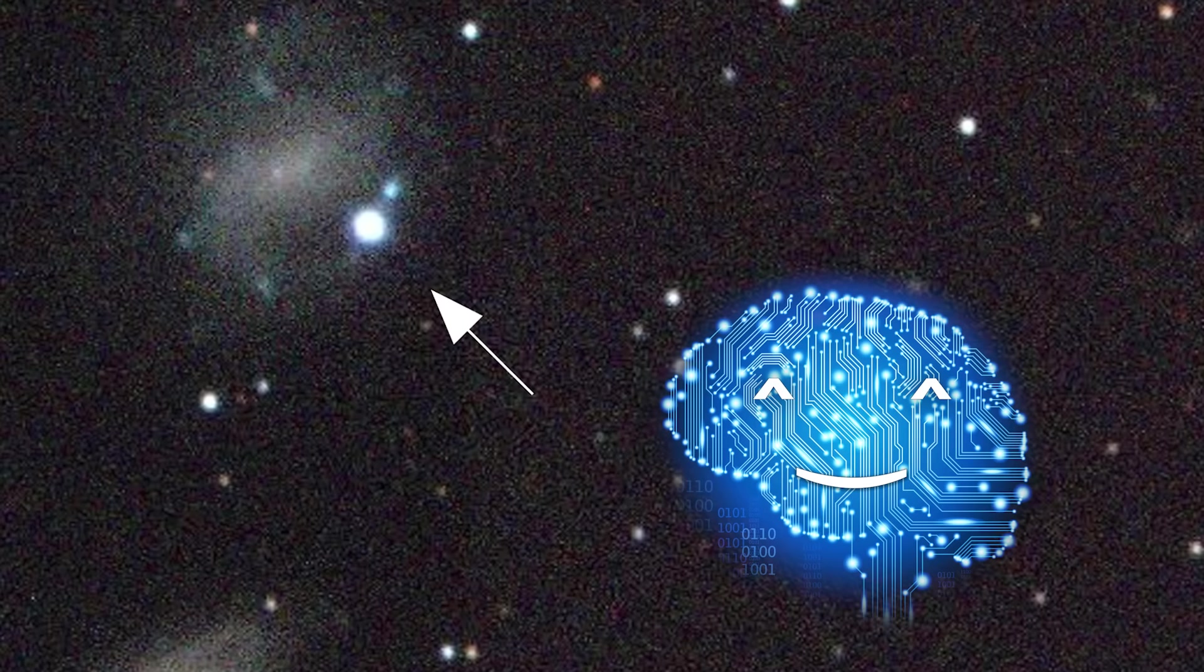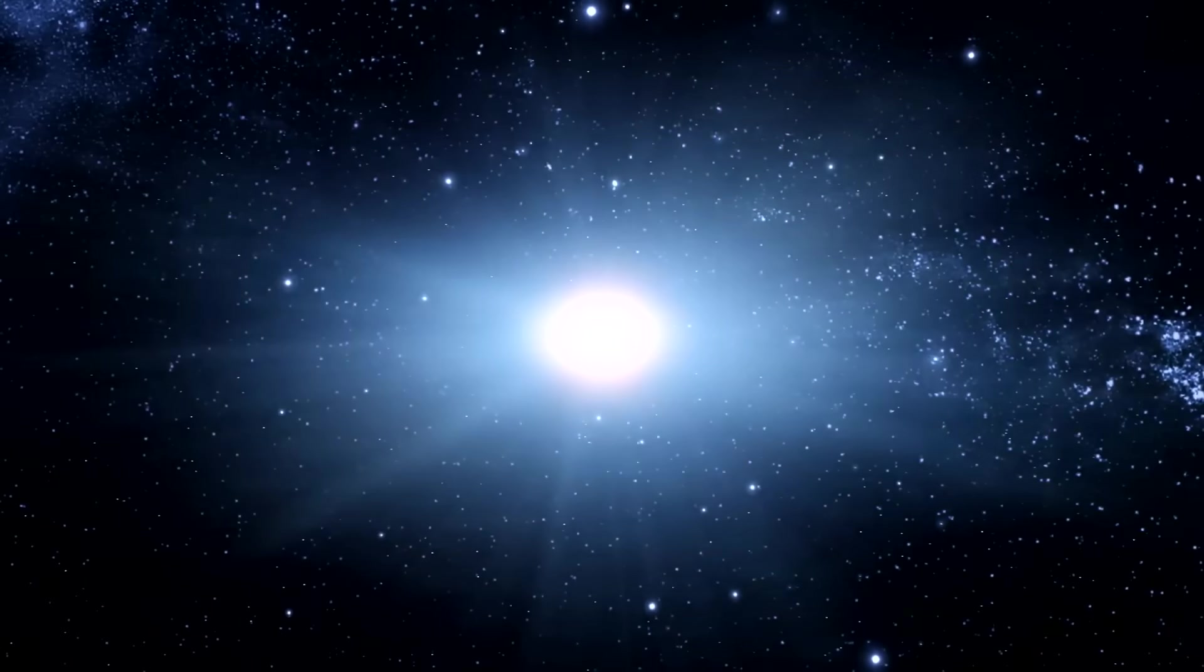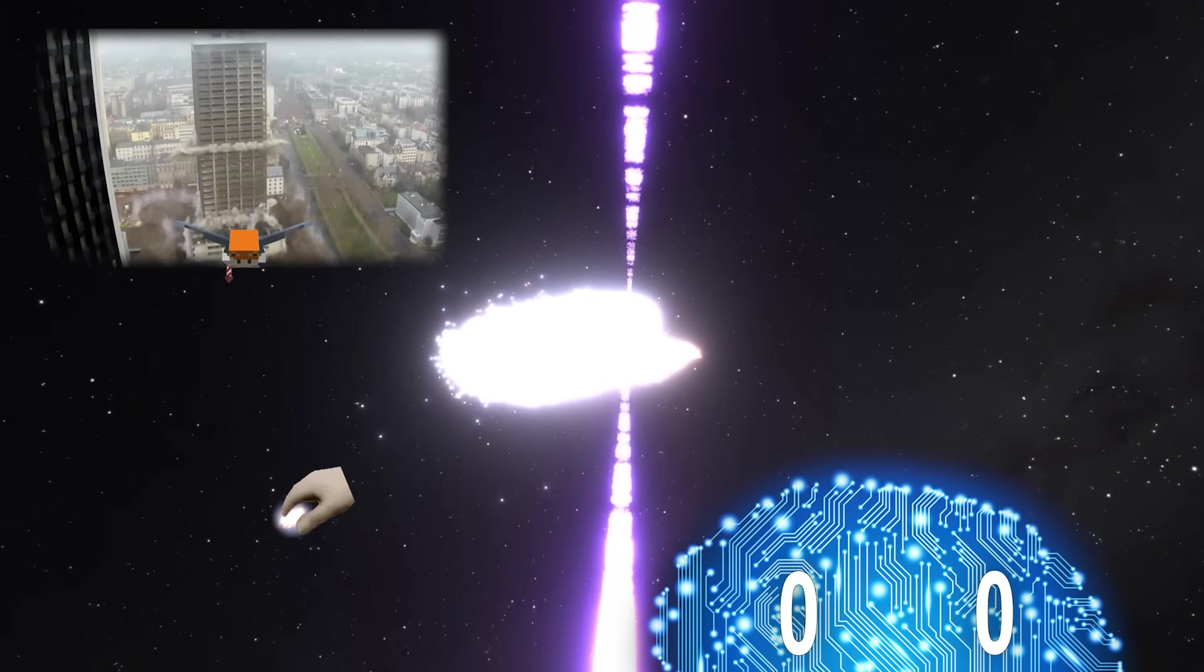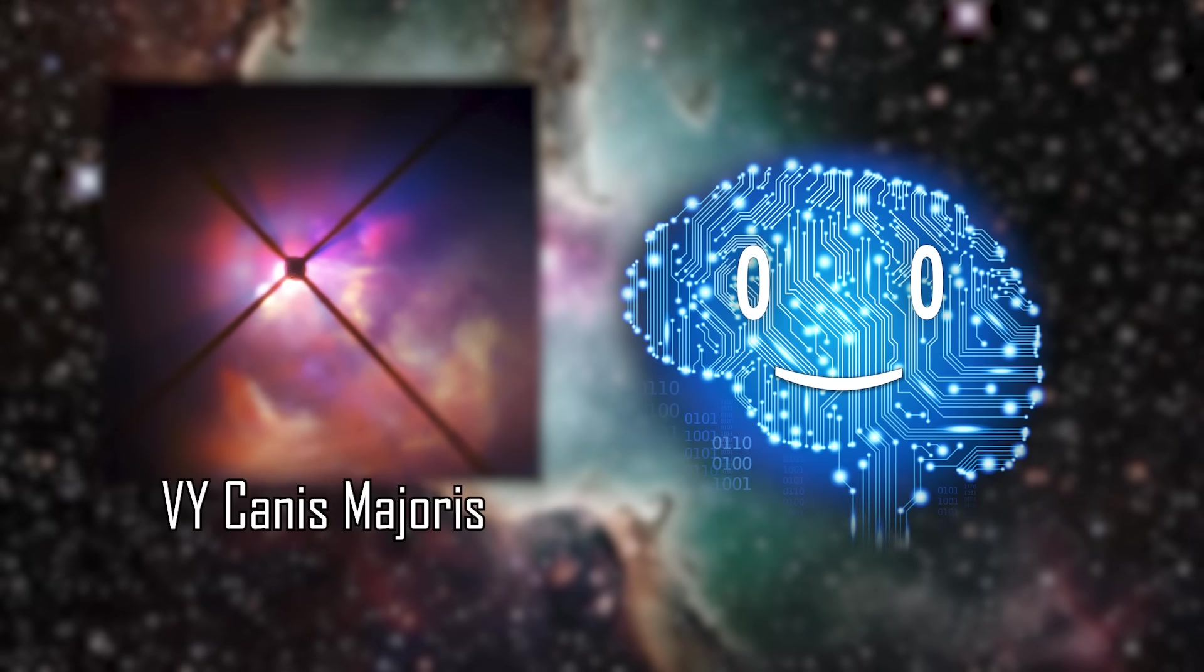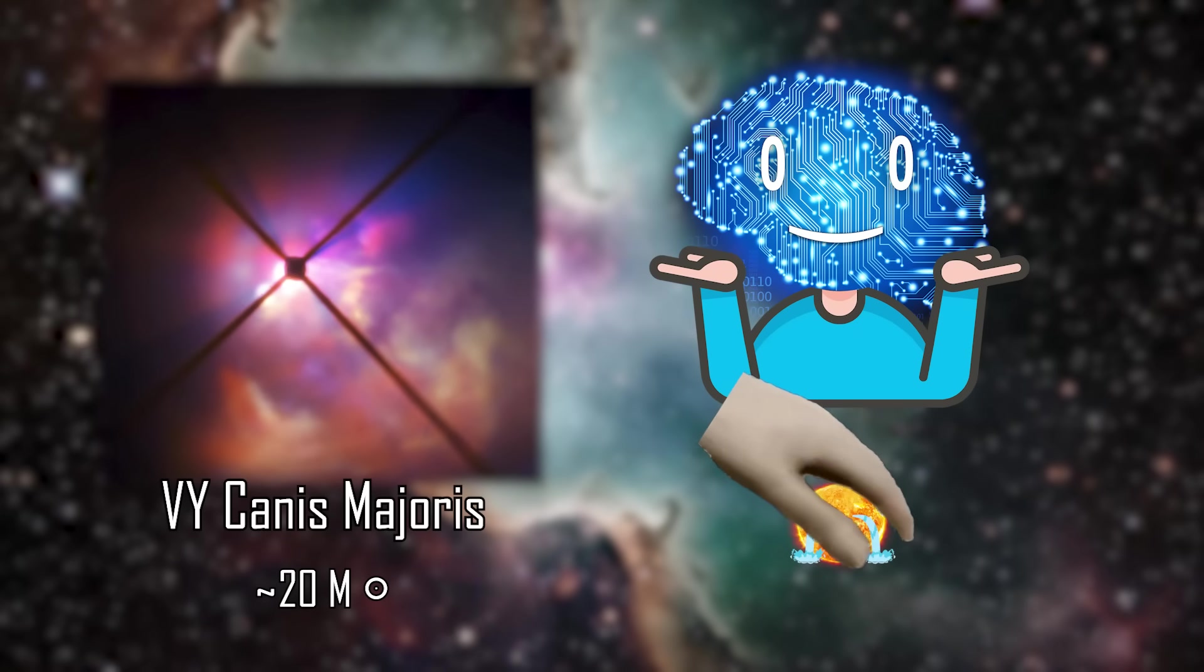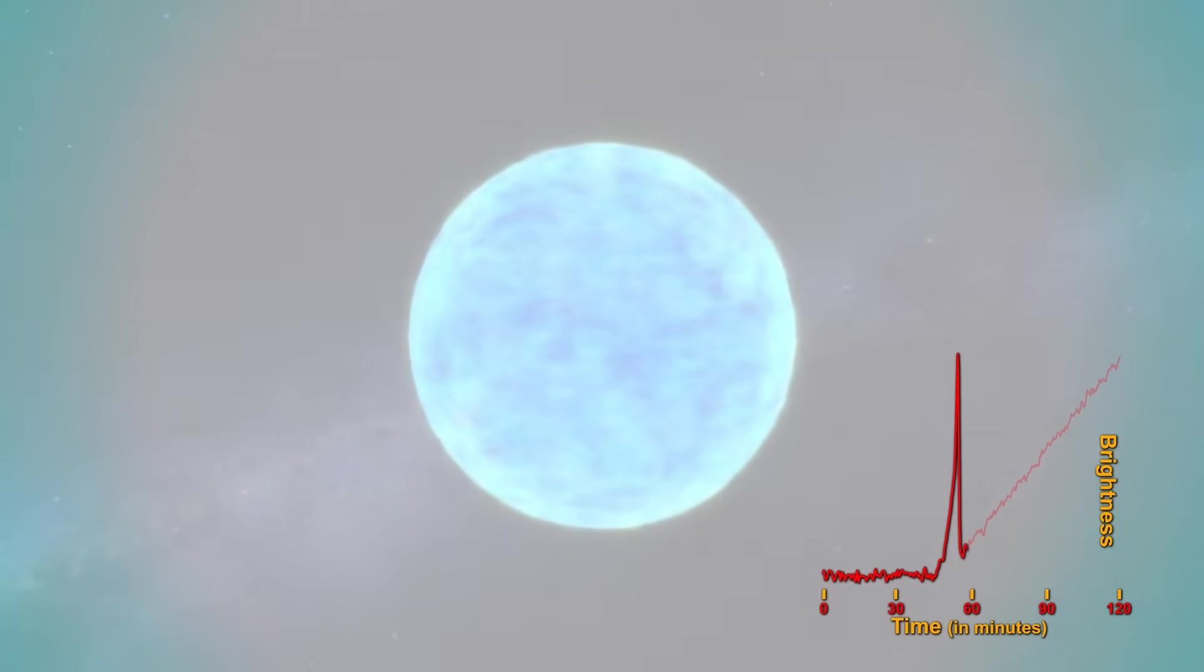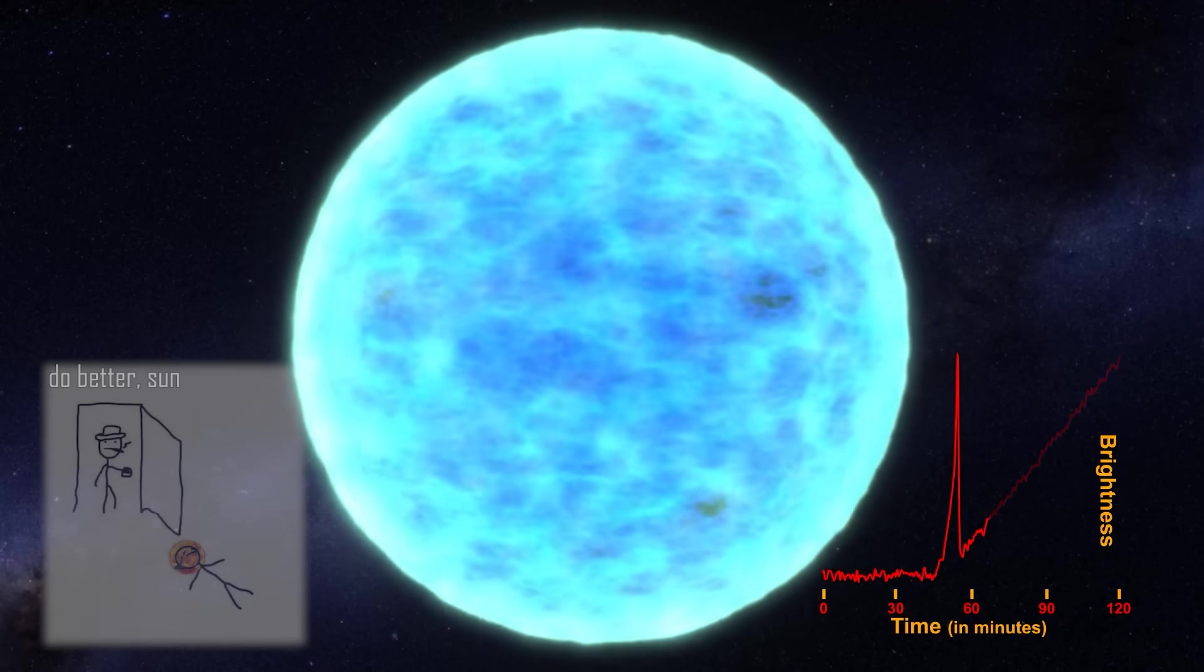Hypernovae. Time to crank the energy level by a factor of 100 once again. We all know of supernovae. Well hypernovae make those look like firecrackers at a building demolition site. Those happen from the collapse of hypermassive giant stars that make our sun insecure. And to be honest it's valid. They release more energy in a few seconds than the sun ever will have in its lifetime. Do better sun.